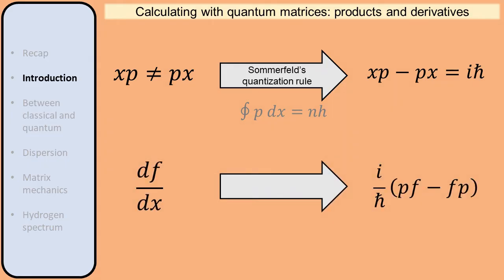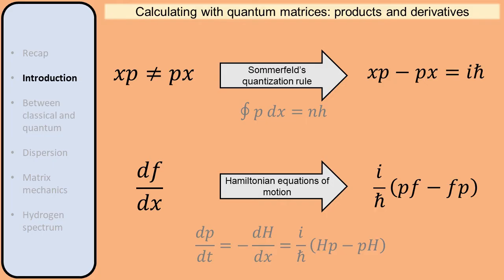But then other difficulties arise. The product of two matrices does not commute. So if in classical mechanics we take the product of two quantities, how should we take the product in quantum mechanics? Also, what does it mean to take the derivative of a matrix with respect to another matrix? It turns out that to find the commutator of two matrices, we can use Sommerfeld's quantization condition from the old quantum theory. From this it follows that the commutator of the position matrix and the momentum matrix is the imaginary unit i times the reduced Planck's constant ħ. Moreover, the derivative of a matrix with respect to another matrix is described by a commutator, because a commutator satisfies the product rule, just like differentiation does. Wolfgang Pauli demonstrated that matrix mechanics correctly describes the known properties of the hydrogen spectrum.